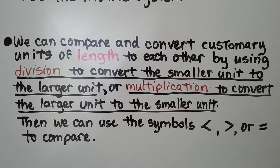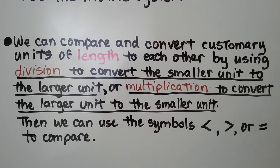We can compare and convert customary units of length to each other by using division to convert the smaller unit to the larger unit, or multiplication to convert the larger unit to the smaller unit. Then we can use the symbols less than, greater than, or equal to to compare them.